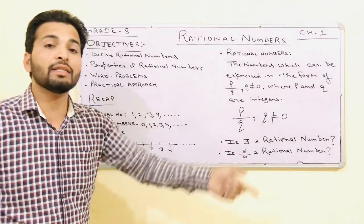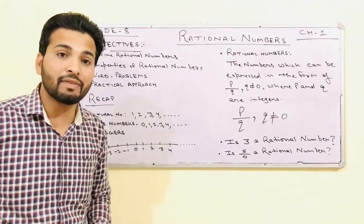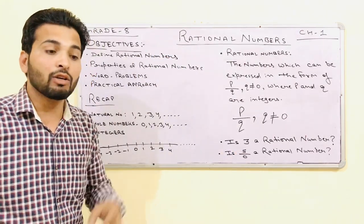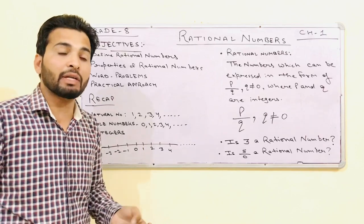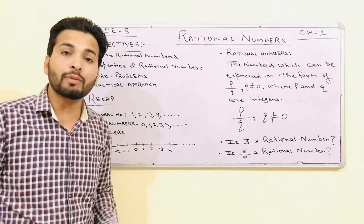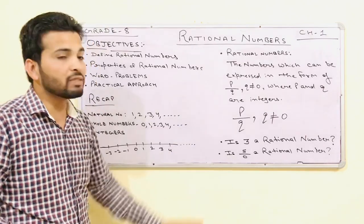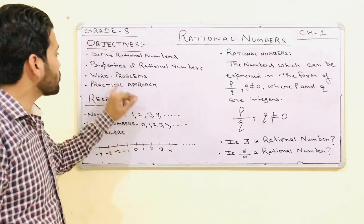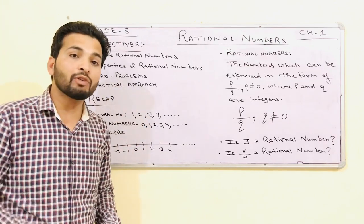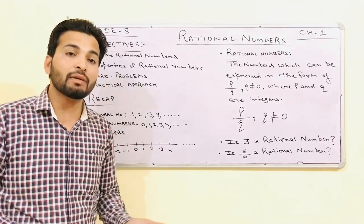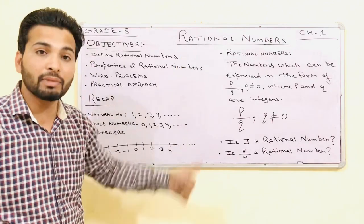Like we have done in chapter 1st of grade 7 integers: commutative properties, associative properties, closure properties — all these properties we will do here again. Next are word problems, meaning in daily routine we are using word problems related to rational numbers.